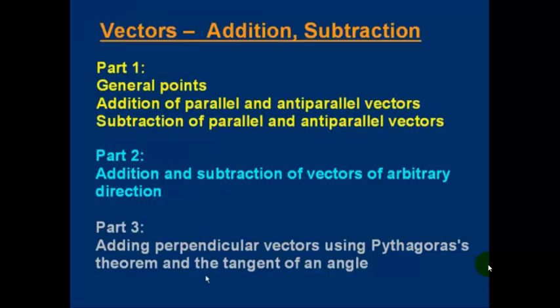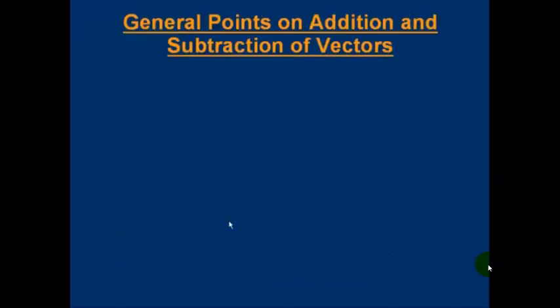Part three will be about adding perpendicular vectors using Pythagoras' theorem to get the magnitude of the new vector and the tangent of an angle to get the direction of the new vector. So that's quite an important one. Let's start with part one. Some general points first of all.